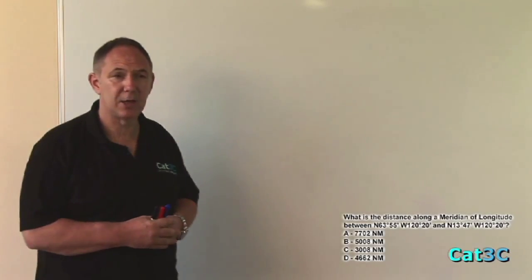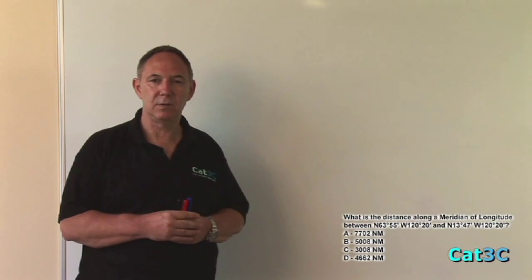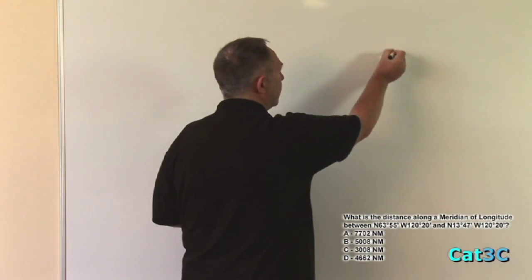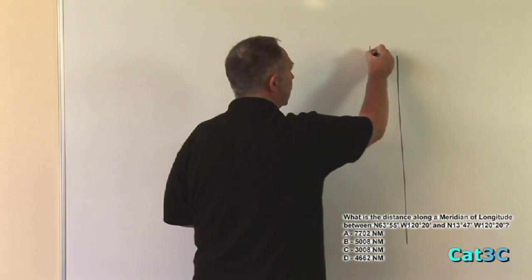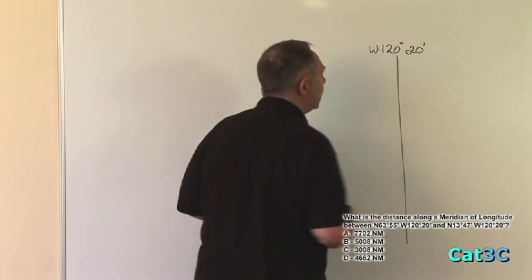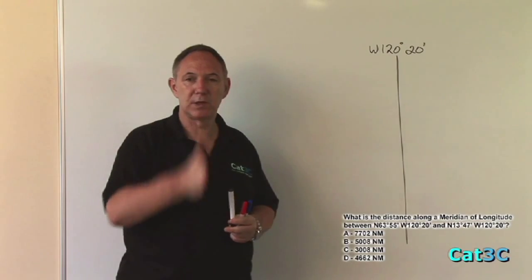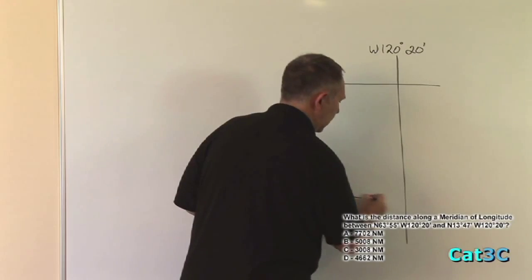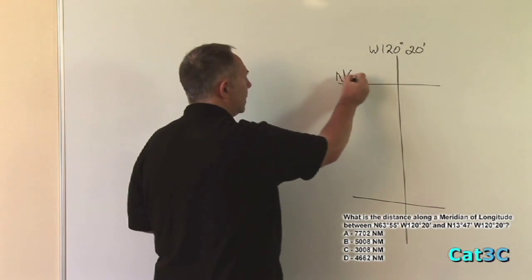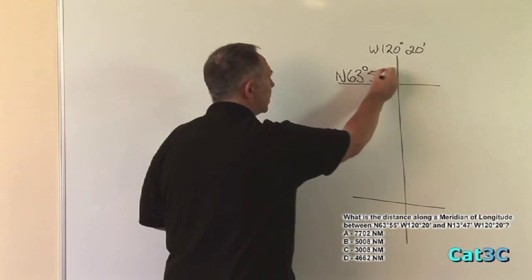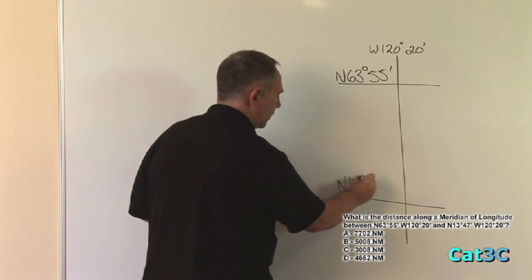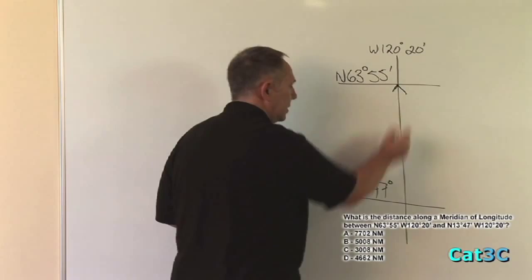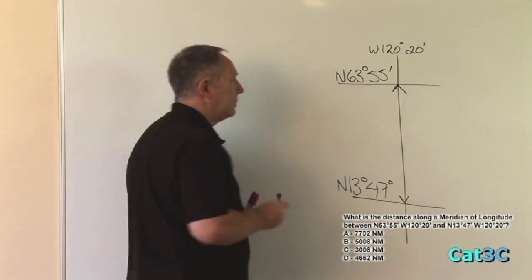The first thing we need to check when trying to calculate a change of latitude is to make sure that the longitudes are the same. In this case, both longitudes are west 120 degrees and 20 minutes. This means that we are travelling up or down the same meridian of longitude. The two applicable latitudes are north 63 degrees 55 minutes and north 13 degrees 47 minutes. Therefore, the change of latitude is between these two points along that same meridian.